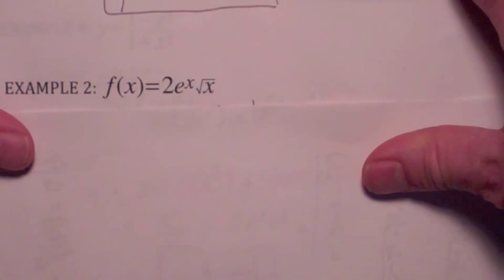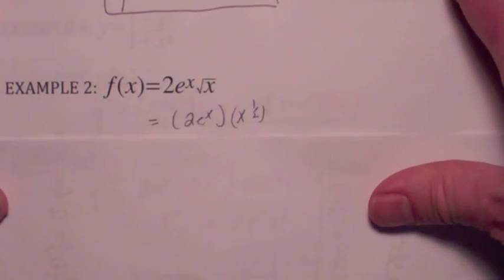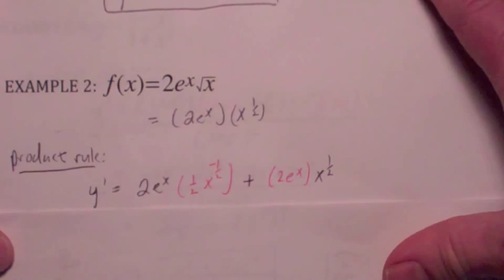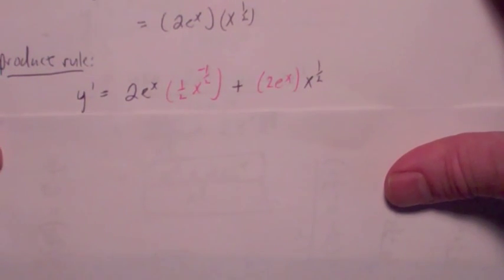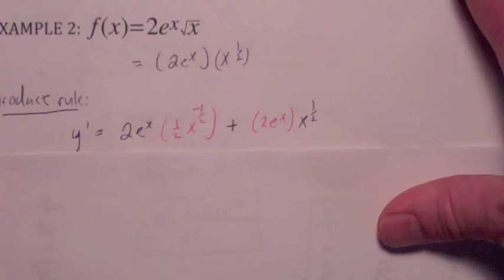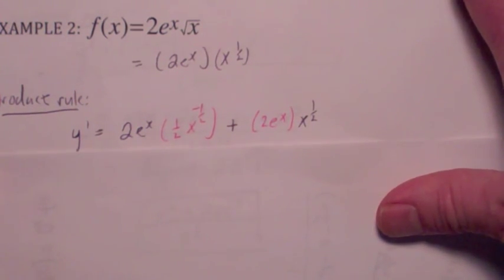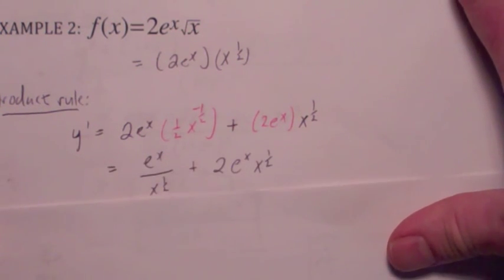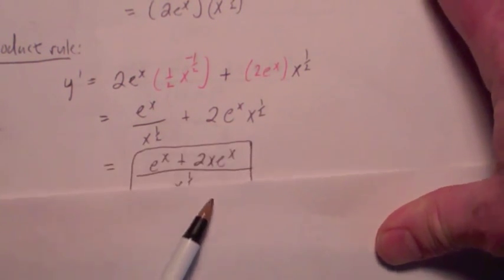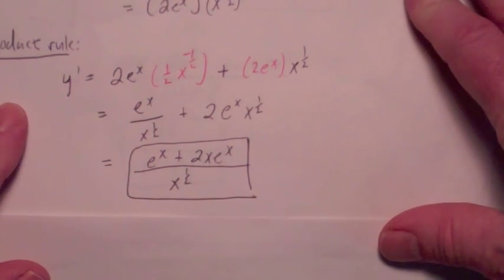Look at this next one. Here, you can look at it as the product of two functions and use the product rule. The first function would be 2e to the x, and the second function would be x to the 1 half. The product rule says the derivative is the first function times the derivative of the second — which is 1 half x to the negative 1 half — plus the derivative of the first, which is 2e to the x, times the second function, x to the 1 half. When you simplify, move the exponent down to the bottom, get the common denominator, and multiply top and bottom by x to the 1 half. The final answer is e to the x plus 2x e to the x, over x to the 1 half.